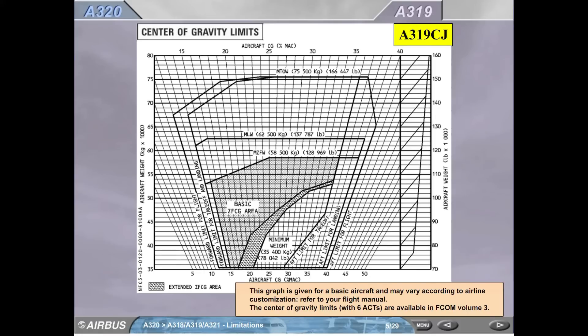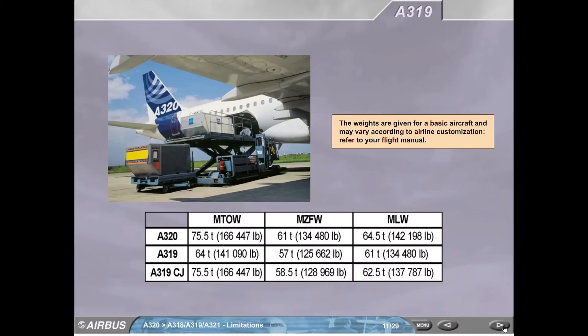A319CJ. Center of gravity limits. This graph is given for a basic aircraft and may vary according to airline customization. Refer to your flight manual. The center of gravity limits are available in FCOM Volume 3.